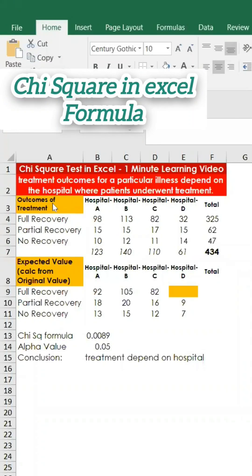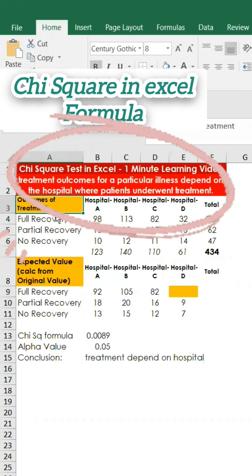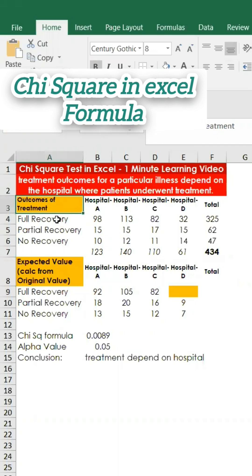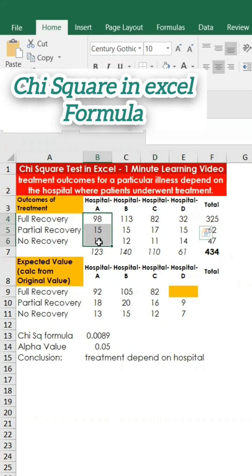This is a chi-square test in Excel one-minute learning video. The situation shows the outcome of treatment with three factors: full recovery, partial recovery, and no recovery. There are four hospitals, namely A, B, C, and D. This is the data, and all we have to do is add up the rows and columns.